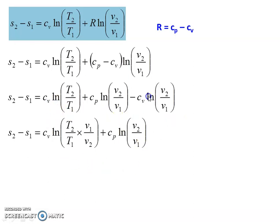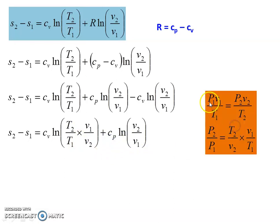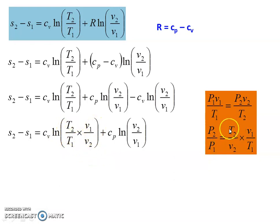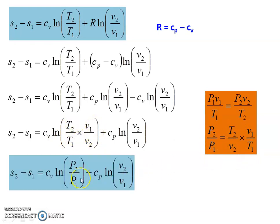Combining the first and third terms: Cv ln(T2/T1) - Cv ln(V2/V1) = Cv ln(T2/T1 × V1/V2). Using the perfect gas equation p1V1/T1 = p2V2/T2, we get p2/p1 = (T2/T1)(V1/V2). So the combined term becomes Cv ln(p2/p1), and the full expression becomes s2 - s1 = Cv ln(p2/p1) + Cp ln(V2/V1). This is the second equation.